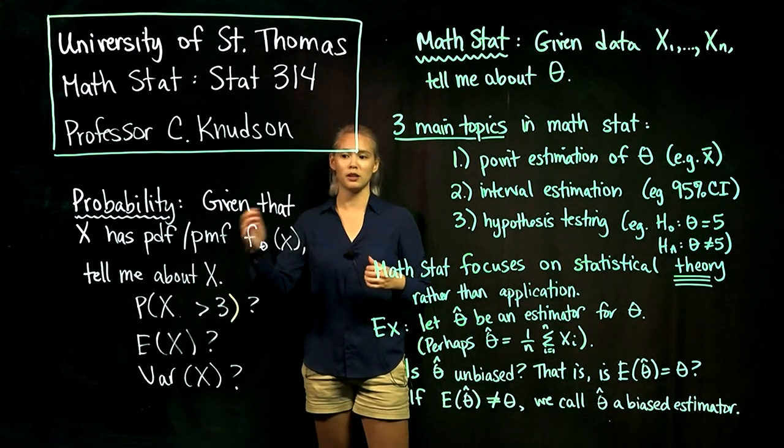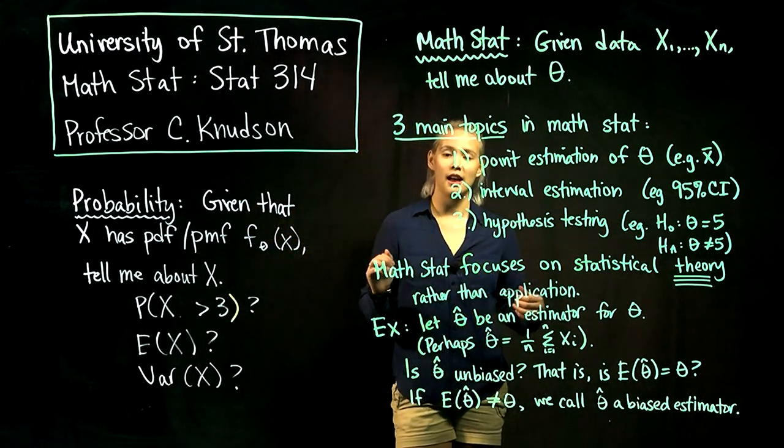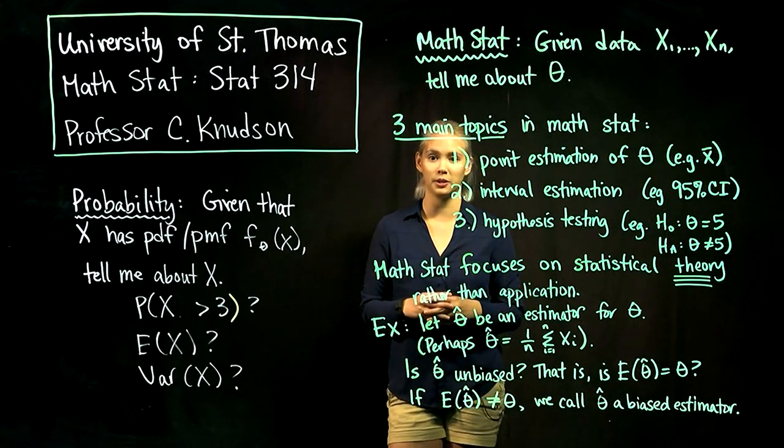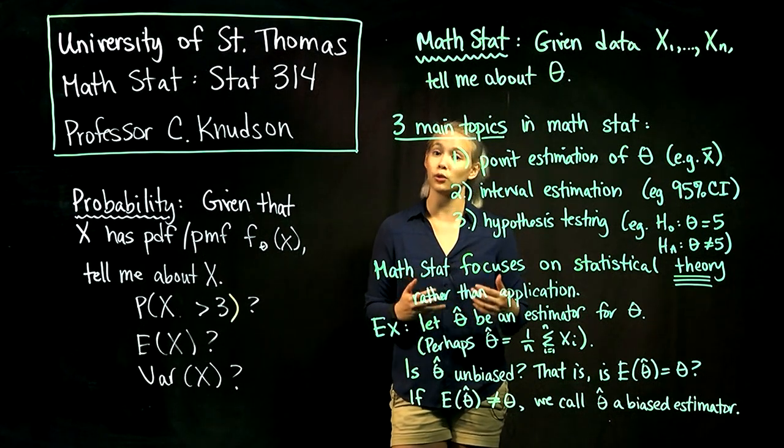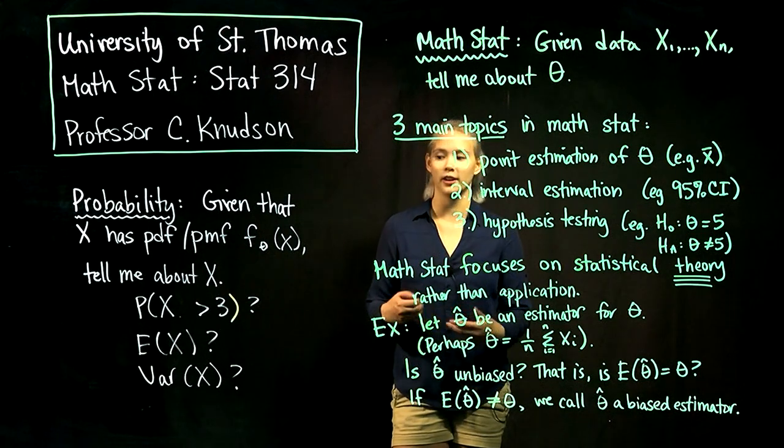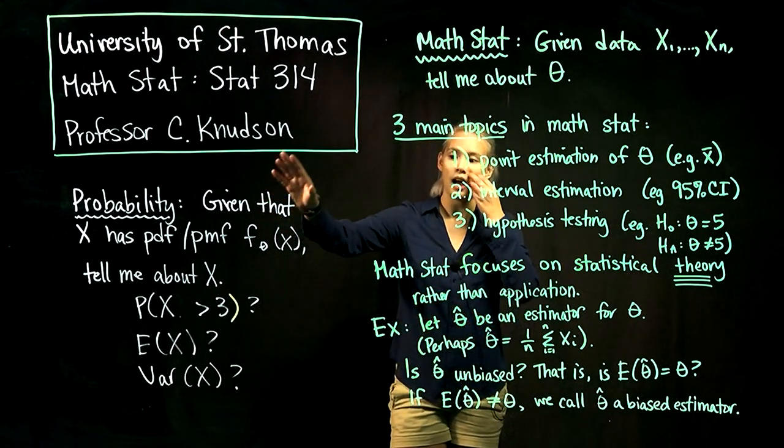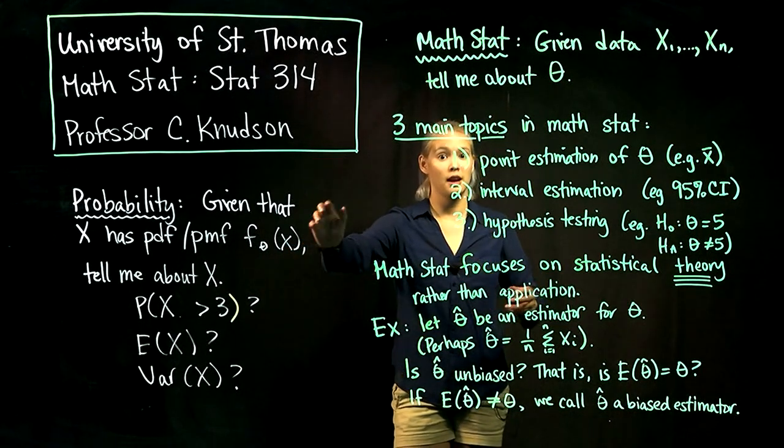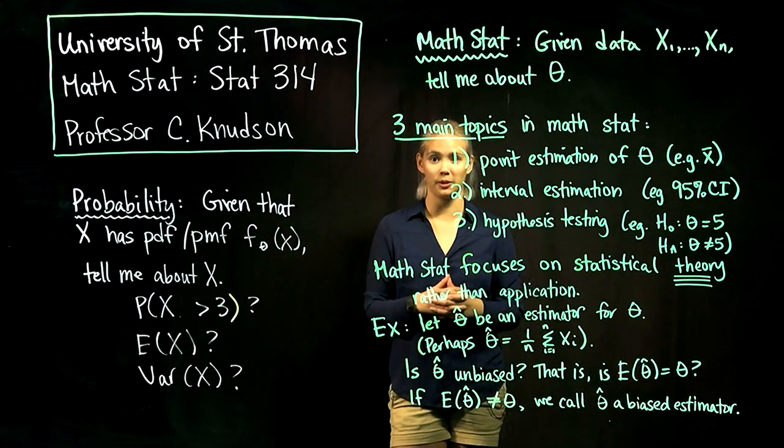So here's some random variable that has this PDF or PMF given, and now I want you to tell me something about the random variable. Maybe the question is what's the probability that X is greater than 3, or what is the expected value of X, or what's the variance of X. So in all of these you'll notice that I am giving you the distribution or the PDF or PMF and the parameter value and I'm asking you to tell me something about the random variable.